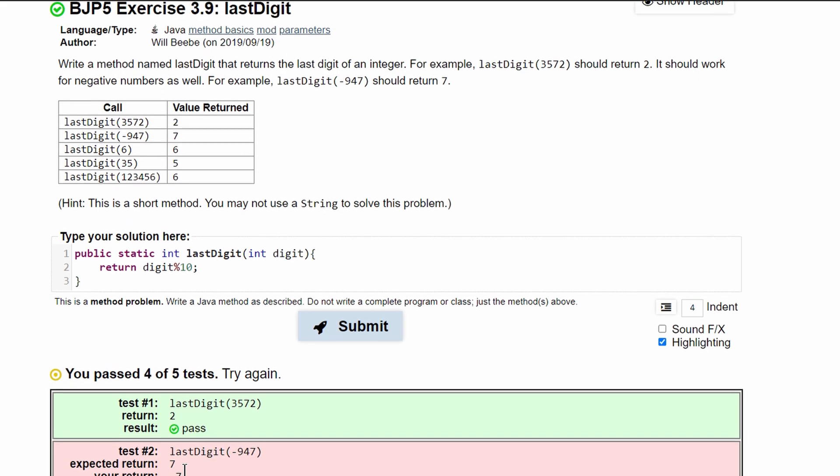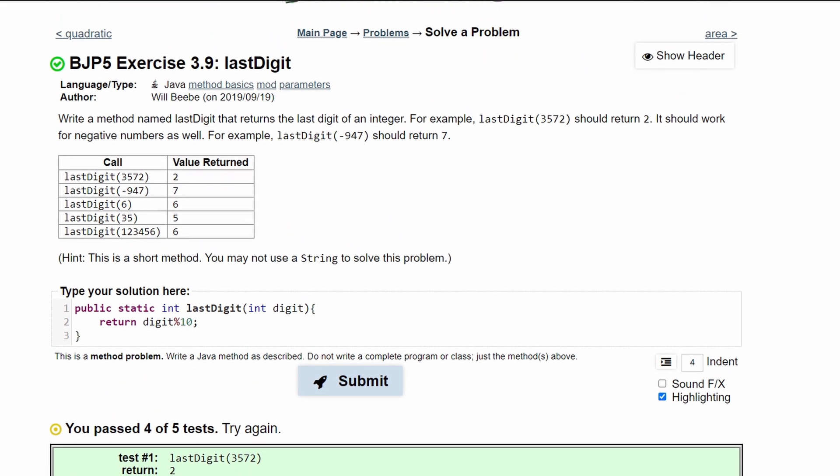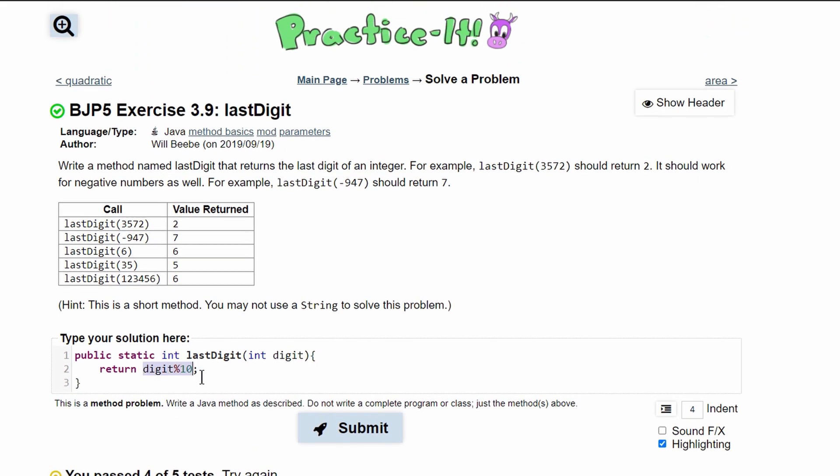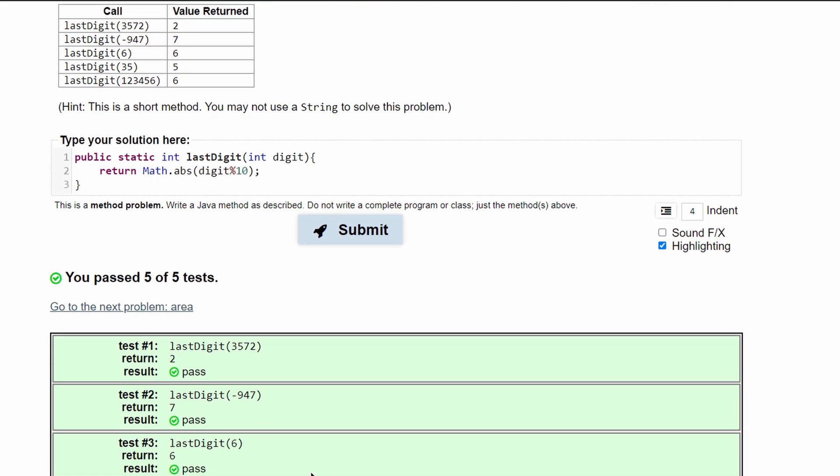This needs to be in absolute values because it wants a seven instead of the negative seven. So we can cut this and put it in a Math.abs and paste it in like this. If we submit it now, it'll work for all of the tests.